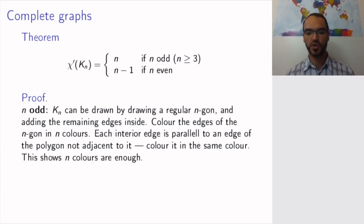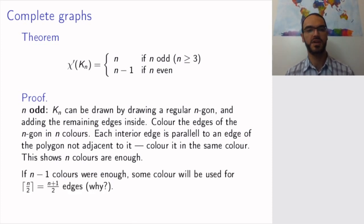So to show that n colors are in fact necessary, assume you can do with fewer colors. So assume that n-1 colors are enough. You certainly know that you cannot have fewer than n-1 colors, because the vertex degree is n-1. So you know for sure you're going to need at least n-1, now we're going to show that n-1 is in fact not enough. If it were, then some color will have to be used for just over n/2 edges. Why is that? Pause and think. The answer is the pigeonhole principle.